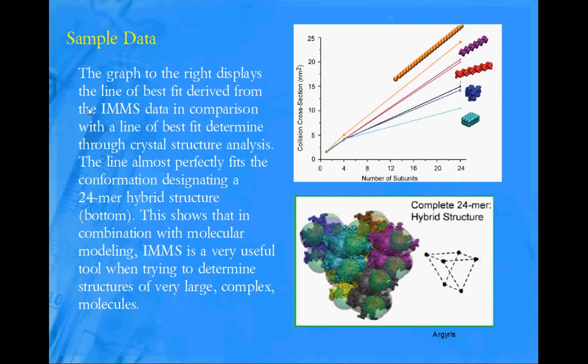Here is a continuance of that data. The collision cross-section, which I mentioned earlier, is determined in the ion mobility phase, and based on the number of subunits in the structure, you can generate a trend line. And you can also do this using crystallographic methods.